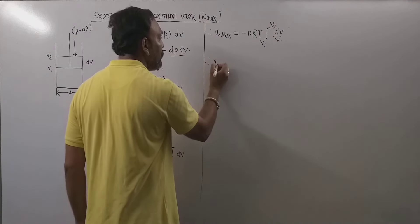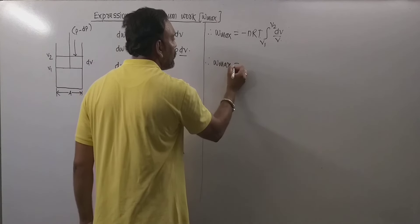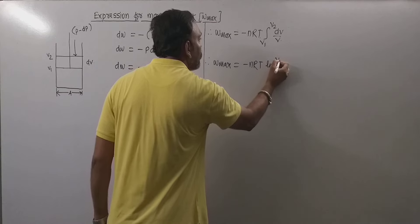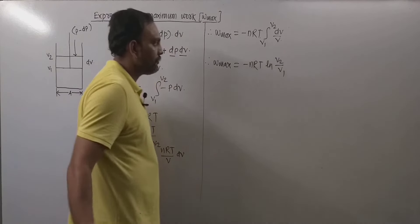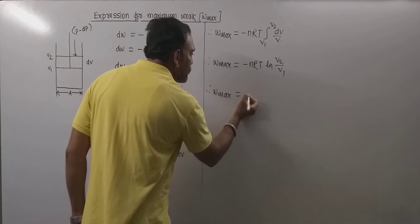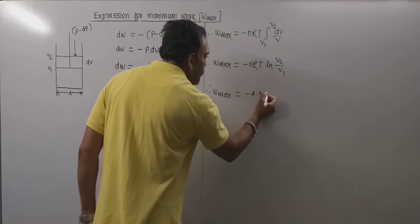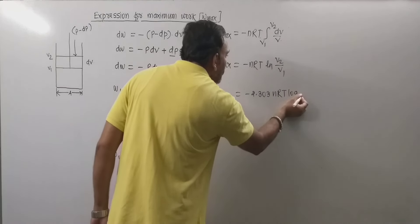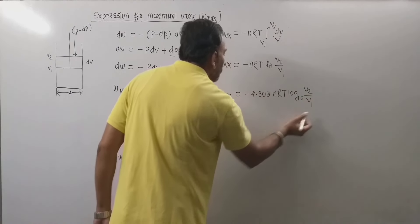Now further this can be given as w_max equals minus nRT ln(v2/v1). Now further this can be given as w_max equals minus 2.303 nRT log base 10 (v2/v1).